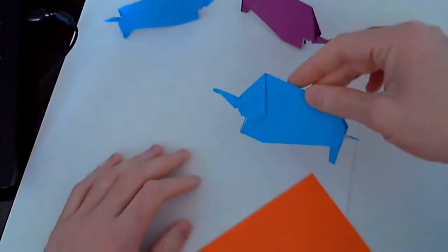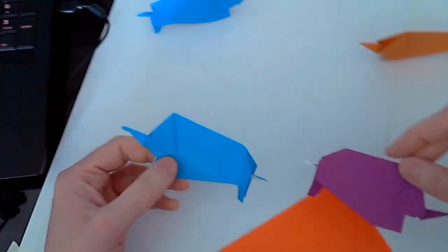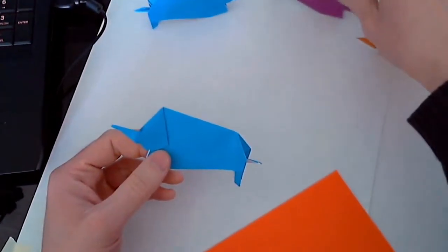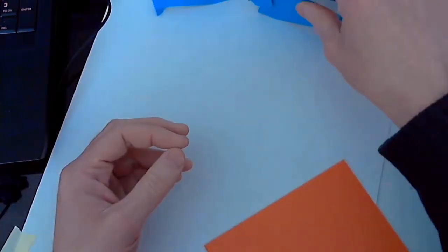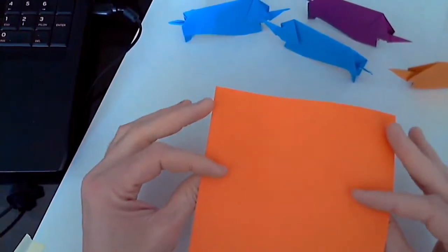In this video, I'm going to show you how to make this origami elephant. Start with a 6x6 piece of origami paper.